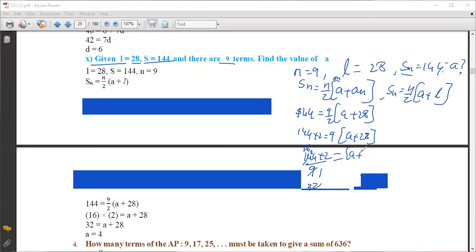32 equal to a plus 28. Bring this 28 to that side: 32 minus 28 equal to a. What is the answer now? 32 minus 28 is what? a is equal to 4. Okay, this is the required answer. So here we can find out our answer, a is equal to 4.